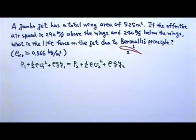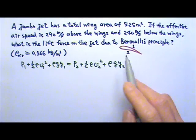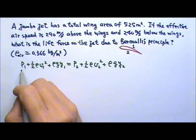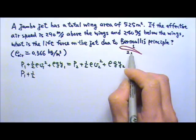We have a flowing fluid problem, so I'm going to use Bernoulli's equation again. Let's say above the wings it's 1, below the wings it's 2. Above the wings we have pressure P1, and we have air flowing, so the density of the air is 0.366. Above the wings the speed is 290, so it's 290 squared.